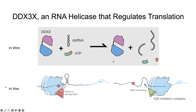To better understand this in the cell or in vivo: the ribosome is the structure that allows proteins to be synthesized. The ribosome starts out delayed from entering the process by forming a hairpin loop. When there is a mutation, it can't unravel the RNA any further, and it's stuck — no further progress is made. However, in a normal situation with no mutation, the RNA interacts with the DDX3X protein, the ribosome advances, and you get protein synthesis.